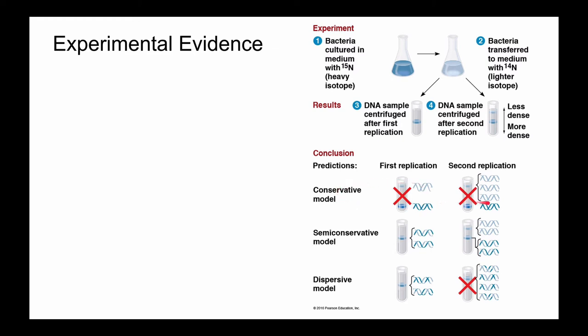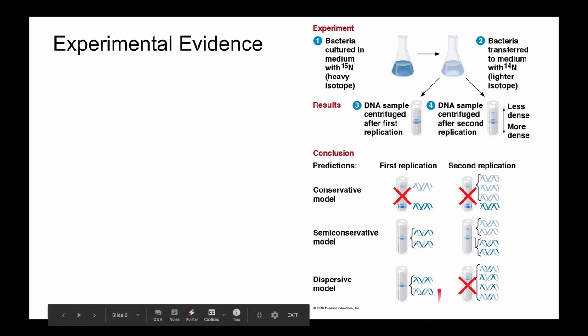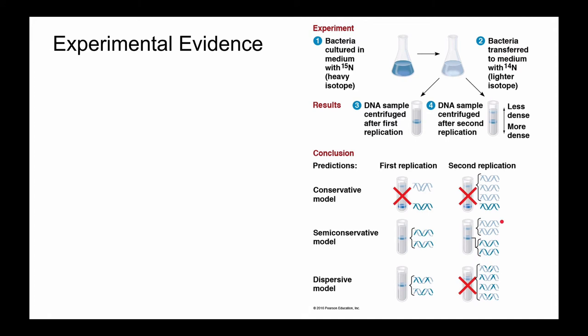So the conservative model, there was no evidence for that. They did not find an abundance of cells with no nitrogen 15 and only some with complete nitrogen 15. Same with the dispersive model, they didn't find little bits in every one of the remaining daughter cells. What they did find is the semi-conservative model where they found half of the daughter cells after two rounds of replication did not have any of the heavier isotope N15 in the nucleotides, and half did. And so this experimental evidence supported that semi-conservative model.